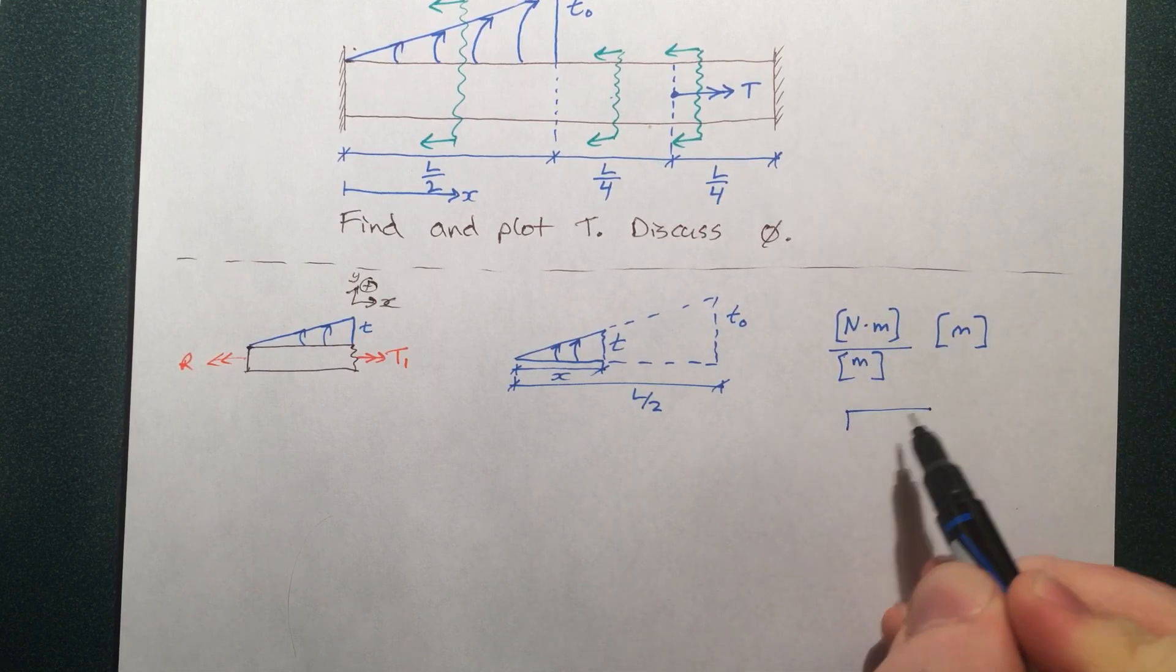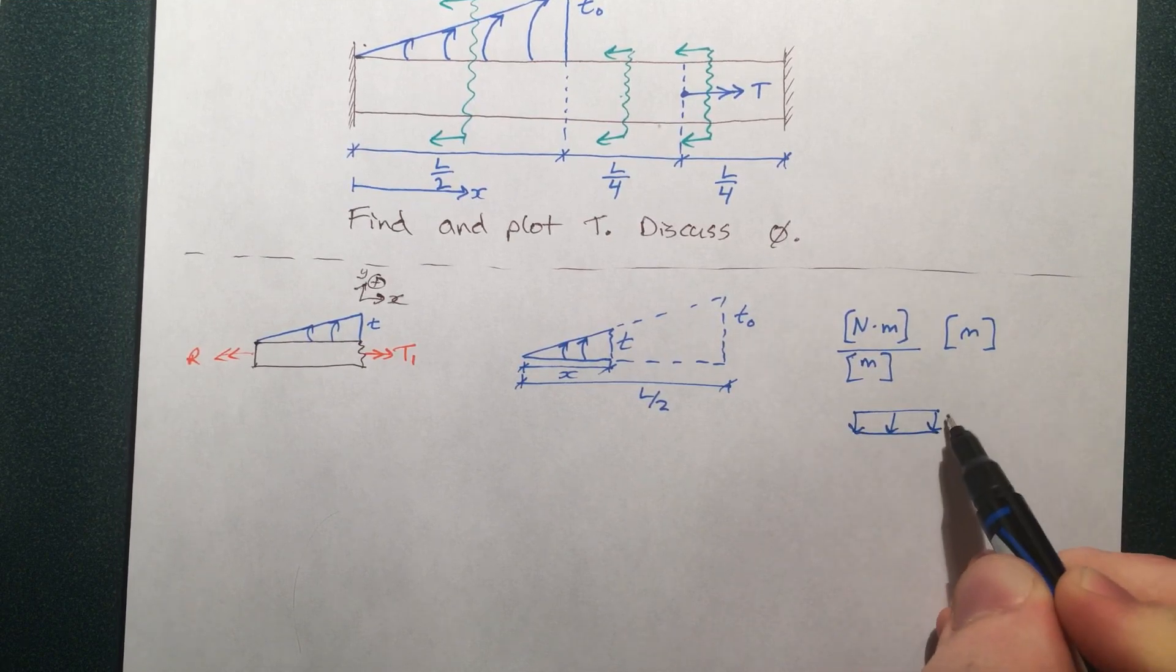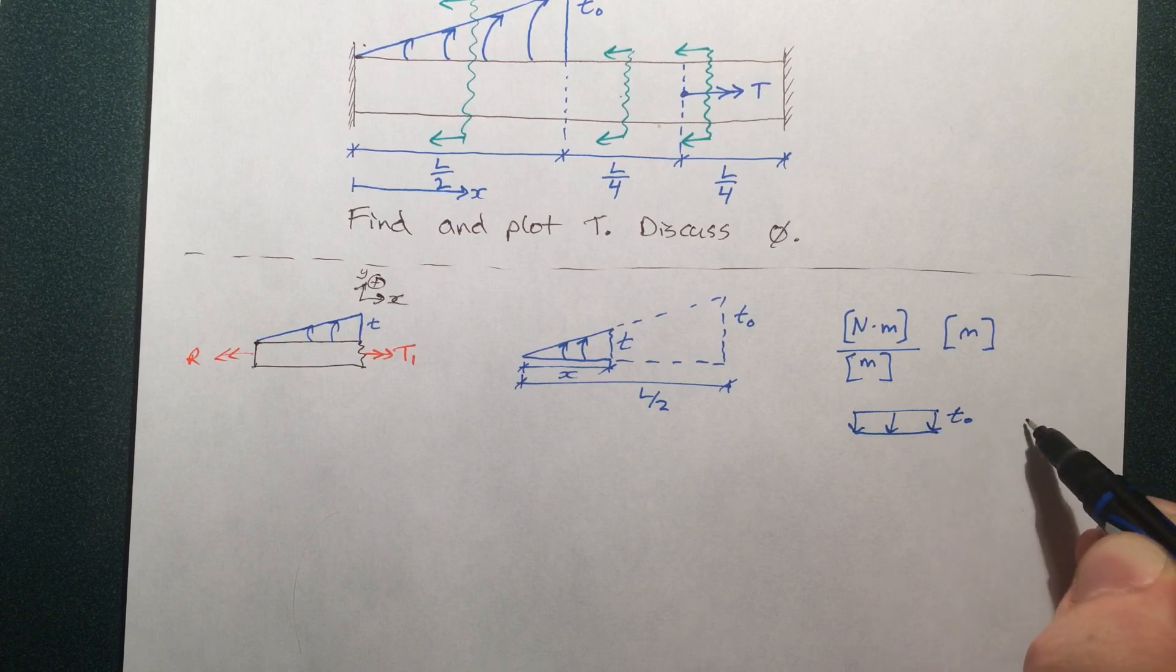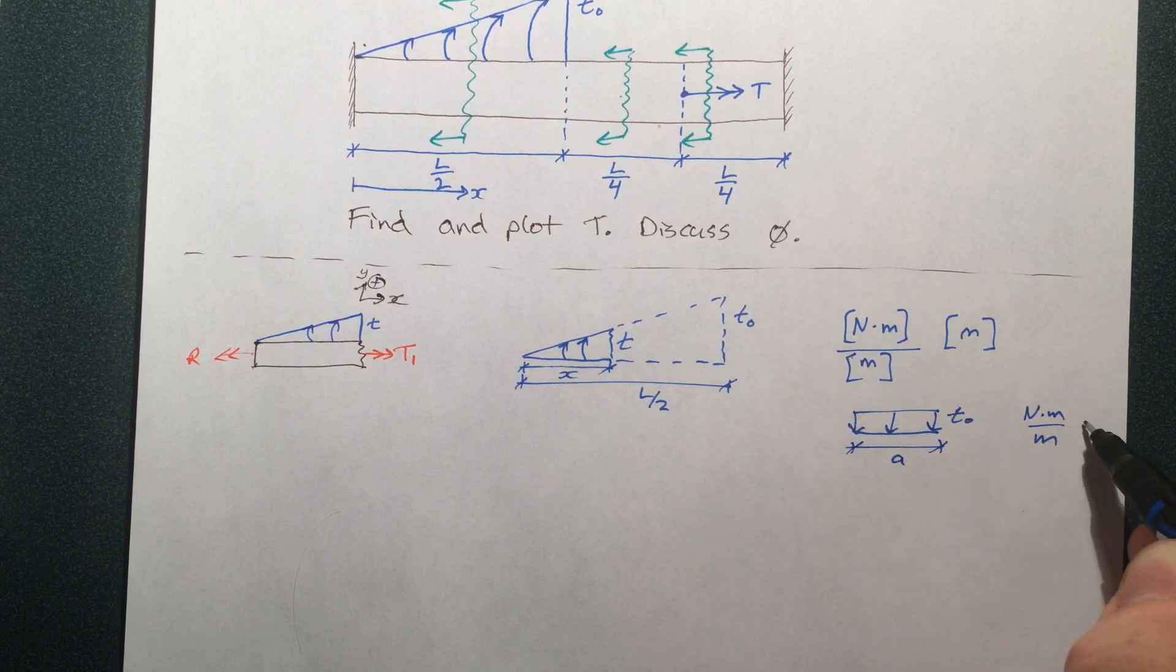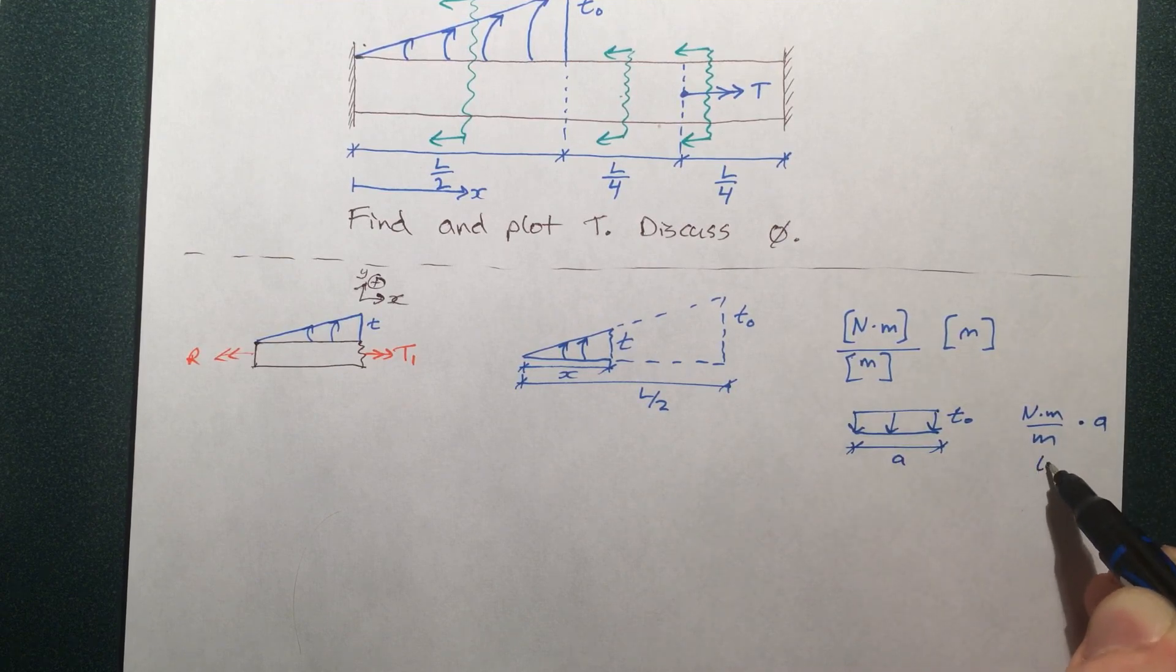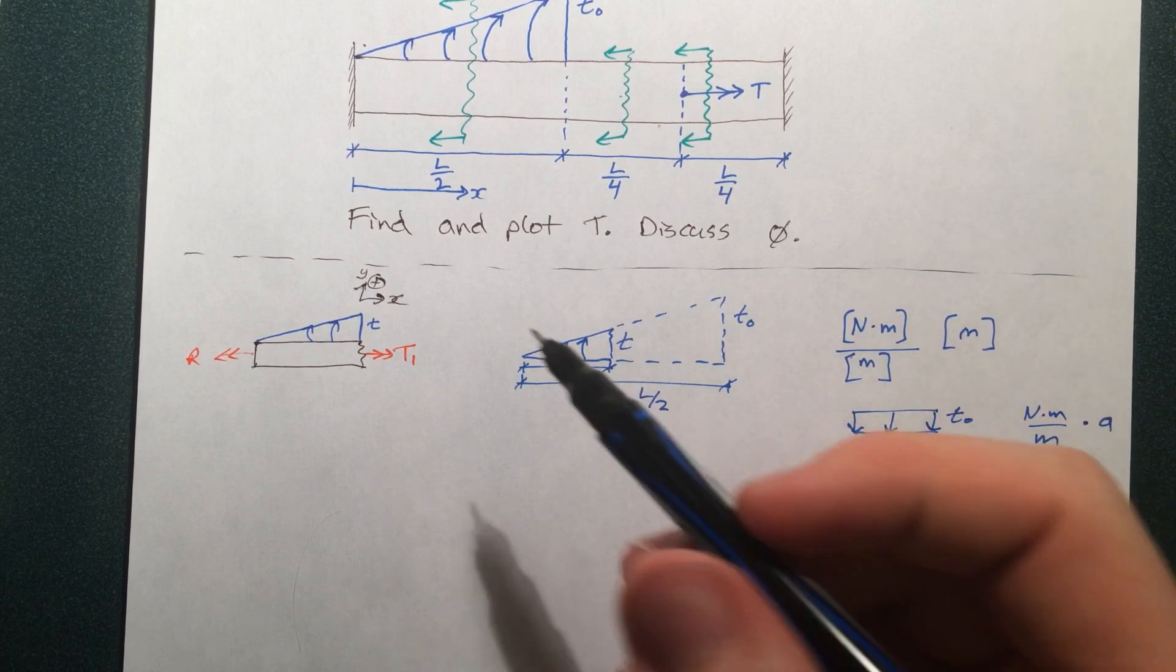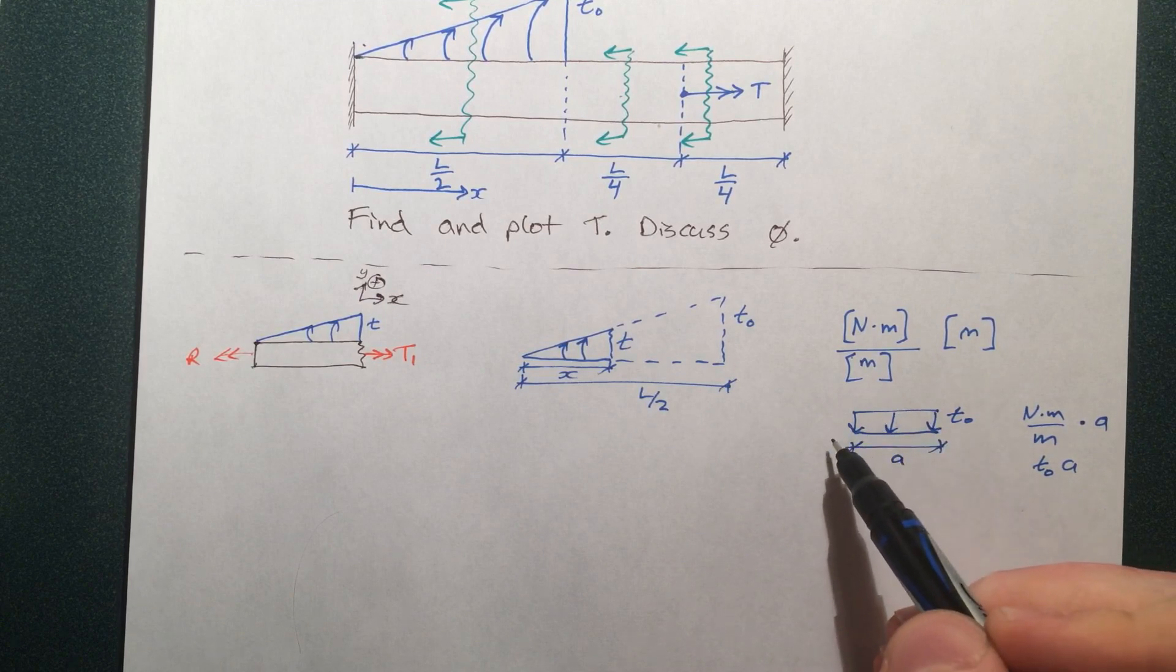So in order to get just newton meters, we need to times this by a unit of length. So this is the basic principle. Now if we had an applied torque, and it was T-naught, this T-naught here simply describes what the newton meter per meter value is at this point. So to find the total bit, we would times it by this distance. Now here it's the same idea, except it's not square, it's triangular.